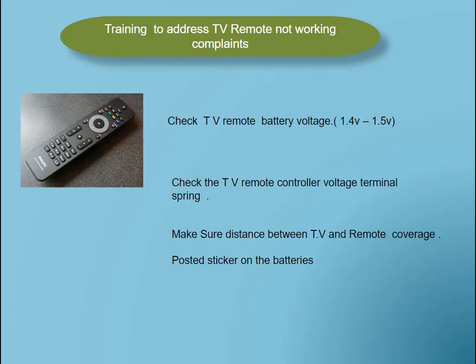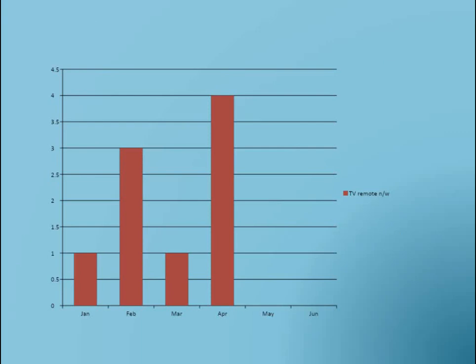Training to address the TV remote not working complaint: check the TV remote battery voltage, which should be 1.4V to 1.5V. Check the TV remote controller battery terminal spring. Make sure the distance between the TV and remote is within coverage range. Post a sticker on the batteries showing when the batteries were last changed — this makes it very easy to identify battery life. After implementation, we saw good results in the long run.